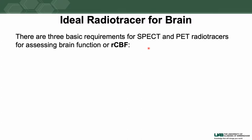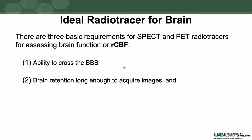The ideal characteristics of a radiotracer for brain imaging require three basic requirements for either SPECT or PET when measuring brain function, metabolism, or cerebral perfusion: first, the ability to cross the blood-brain barrier; second, brain retention long enough to acquire images; and third, lack of redistribution — because SPECT images are usually acquired one to four hours after injection, while PET images are acquired about 30 to 45 minutes after injection. You don't want redistribution after injection; you want the activity fixed at the time of injection, so the tracer should enter and get locked into the brain.